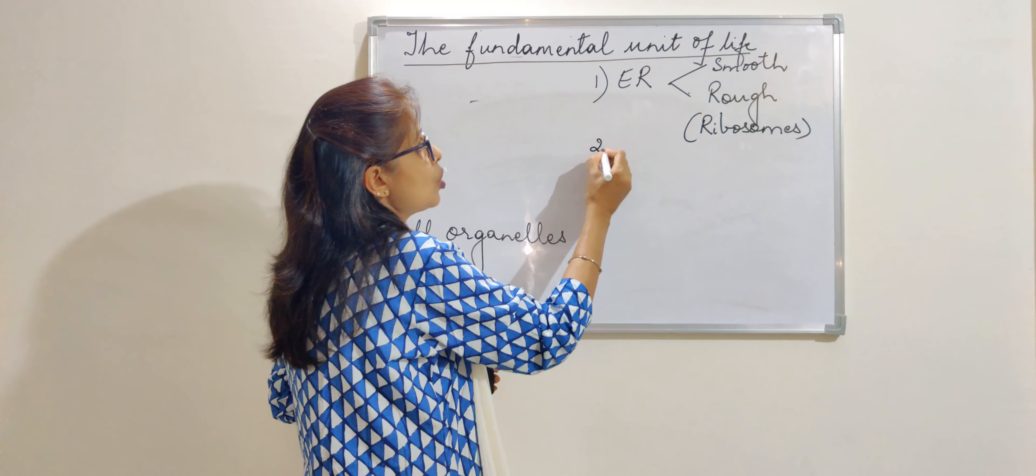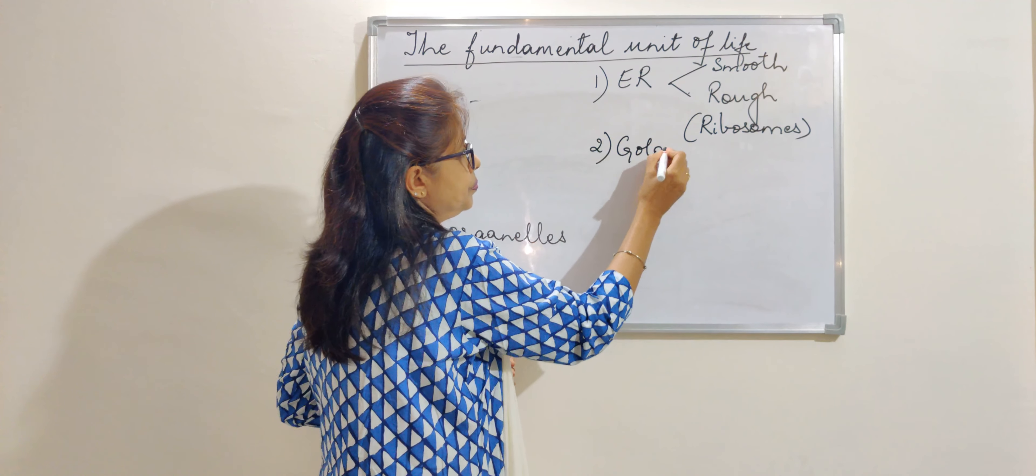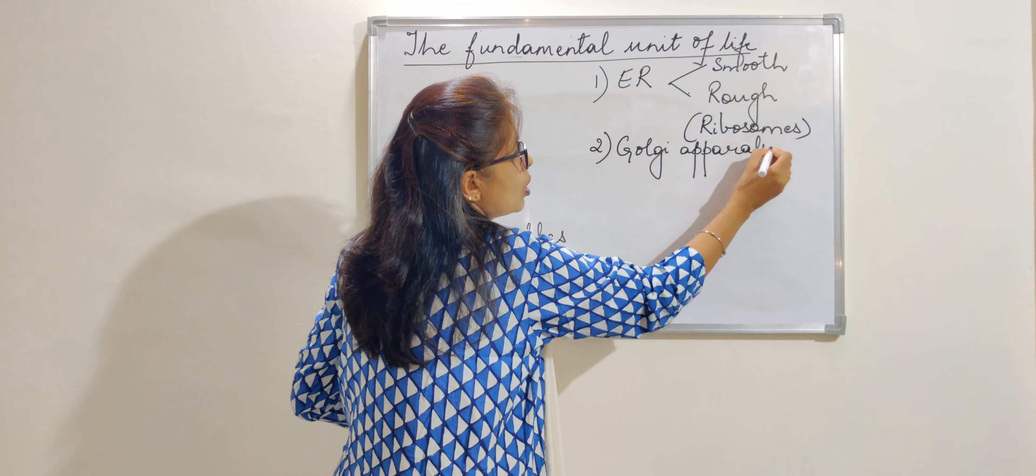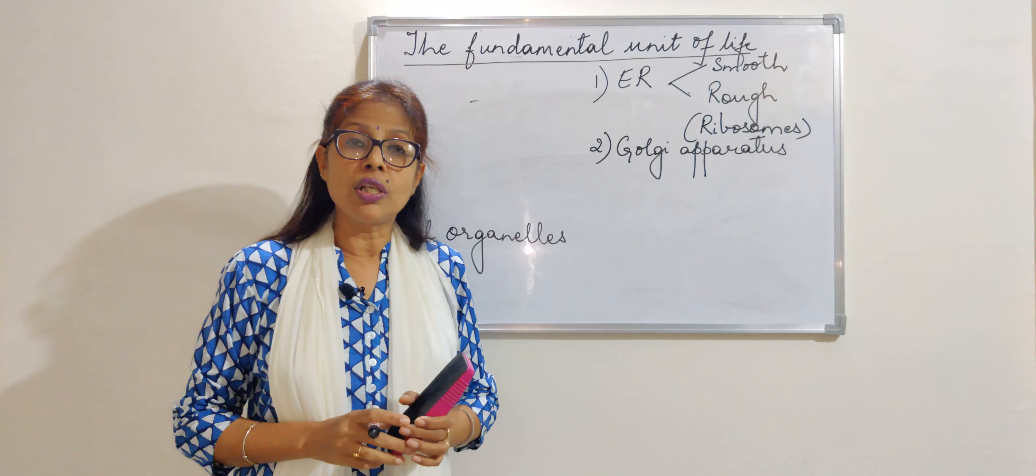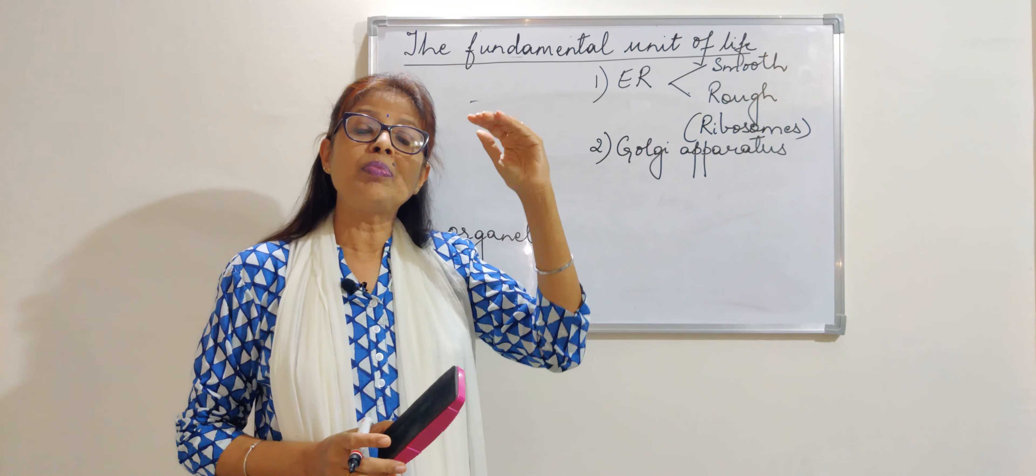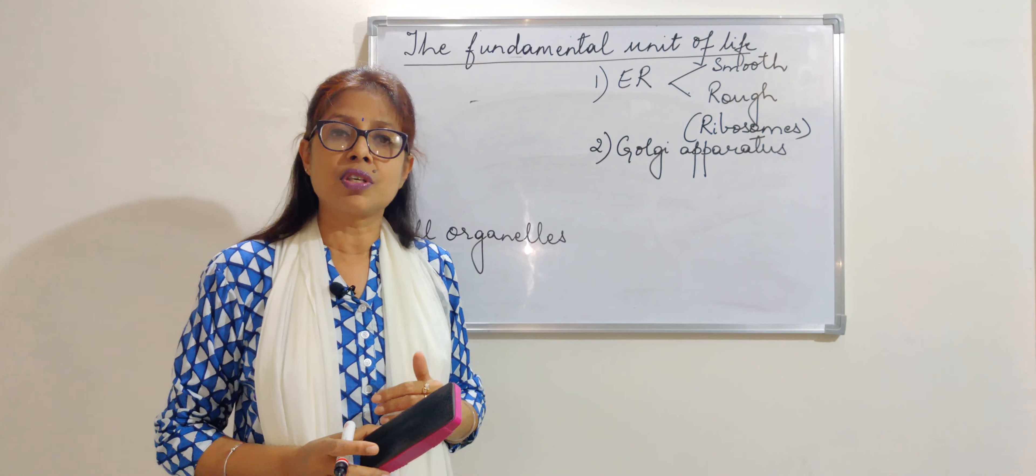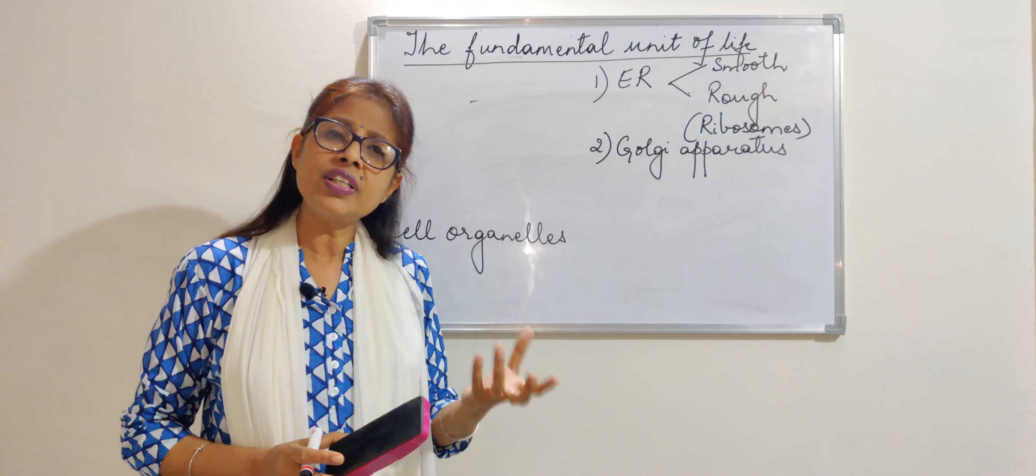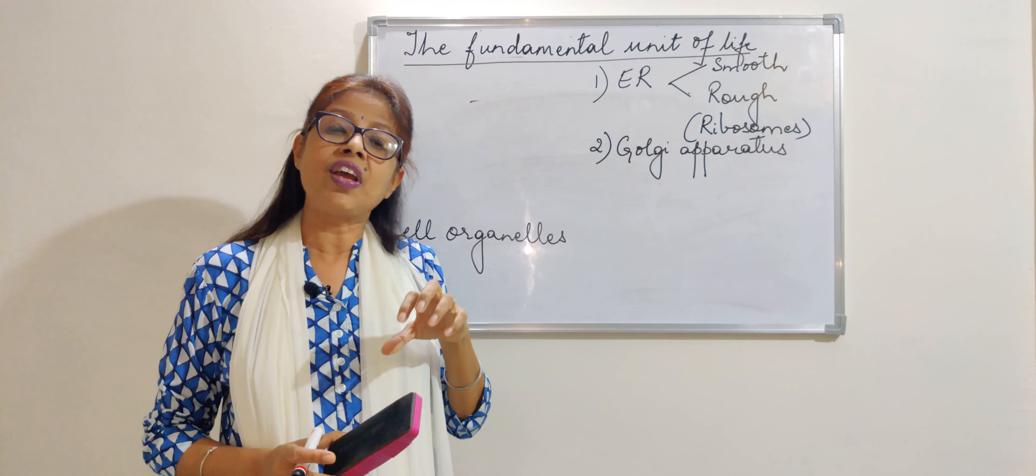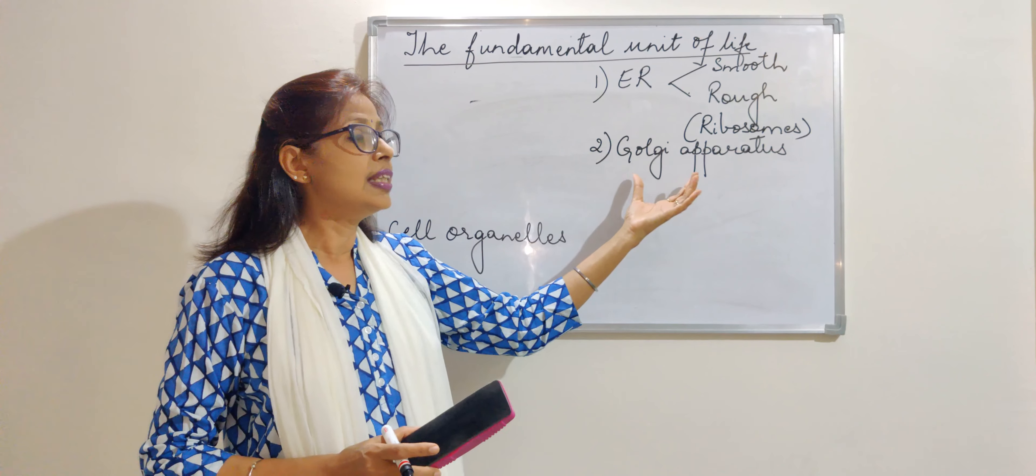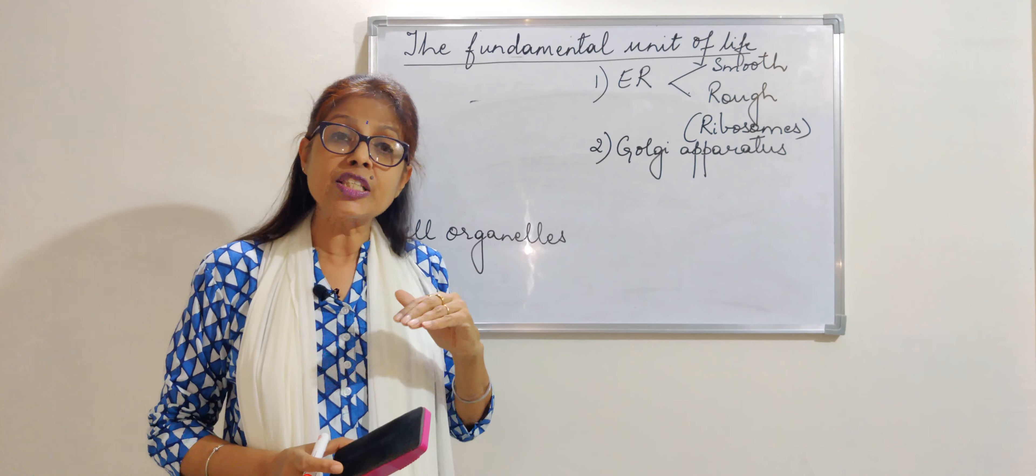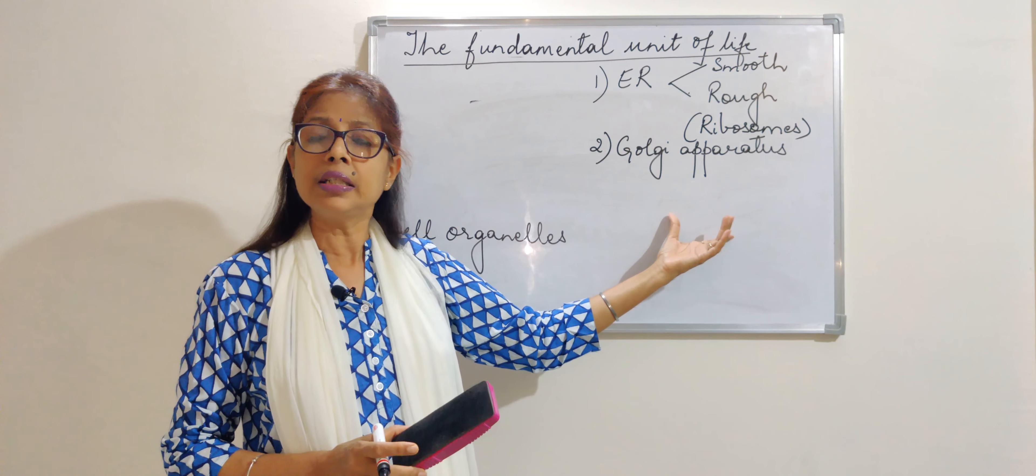Then comes Golgi apparatus. This Golgi apparatus can also be called by the name Golgi bodies or Golgi complex. Their main function is to stack up the things. They act like racks for the cell. They stack it up and they help in preserving, and whenever it is needed by the cell or the body, they give it out. They also help in packaging. That means as per the requirement of the body, they supply the things.